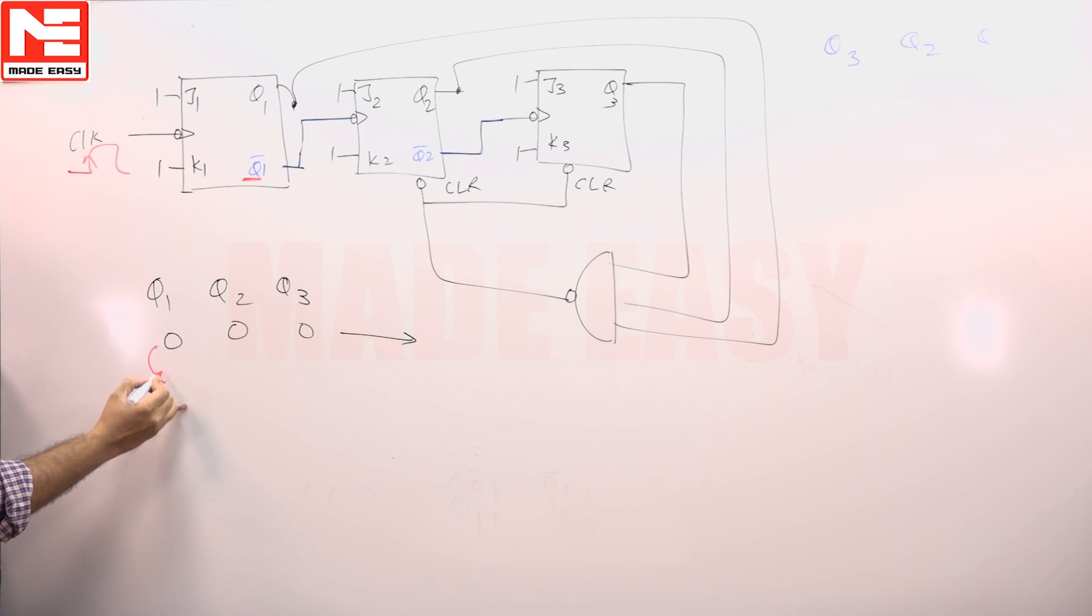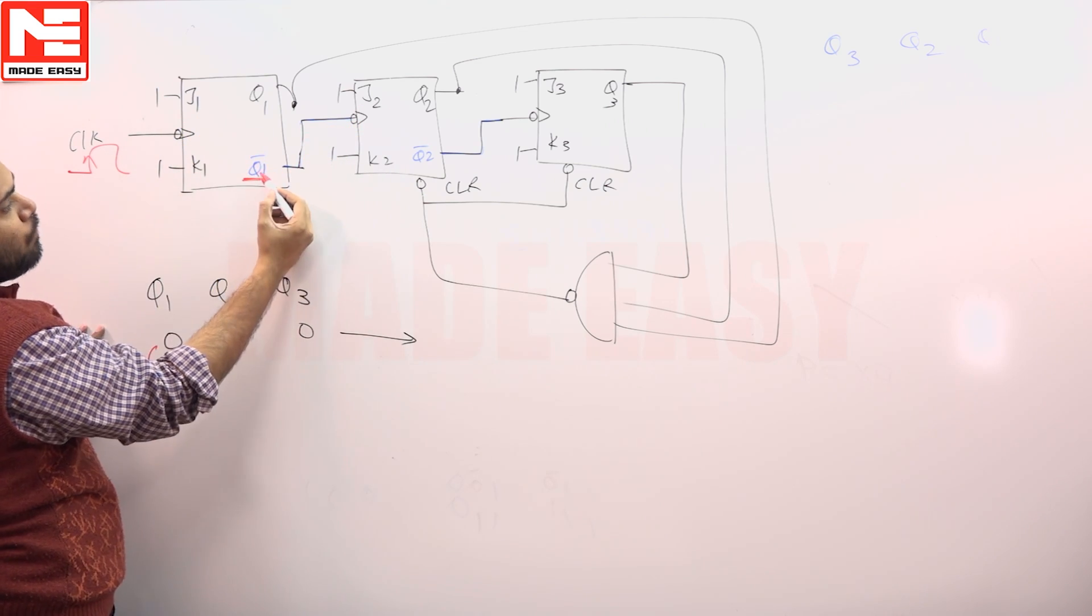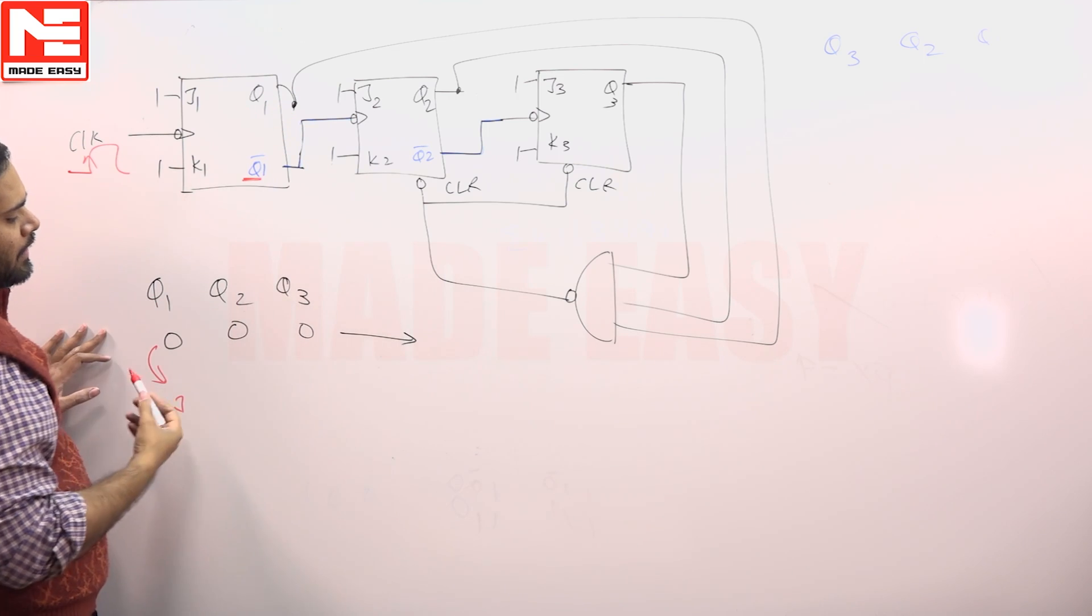So what is going to happen? This Q1 will just toggle from 0 to 1. When this Q1 is toggling from 0 to 1, this system will get triggered because Q1 bar is connected, not Q1.